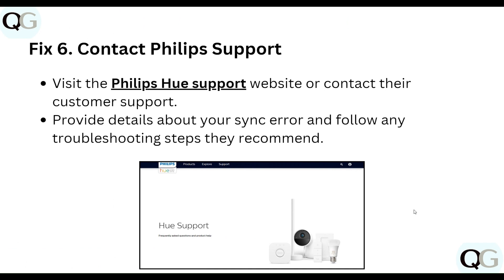The sixth step is to contact Philips Hue support. Visit the Philips Hue support website or contact their customer support, provide details about your sync error, and follow any troubleshooting steps they recommend.